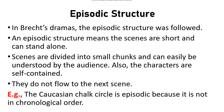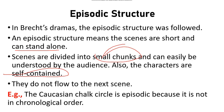Sixth is episodic structure. In Brecht's dramas, episodic structure was followed. Episodic structure means the scenes are short and can stand alone — divided into small chunks that can easily be understood by the audience. Simple language is used, and the characters are self-contained. Each scene does not necessarily have a relationship with the next. For example, The Chalk Circle is episodic because we do not watch it in chronological order.